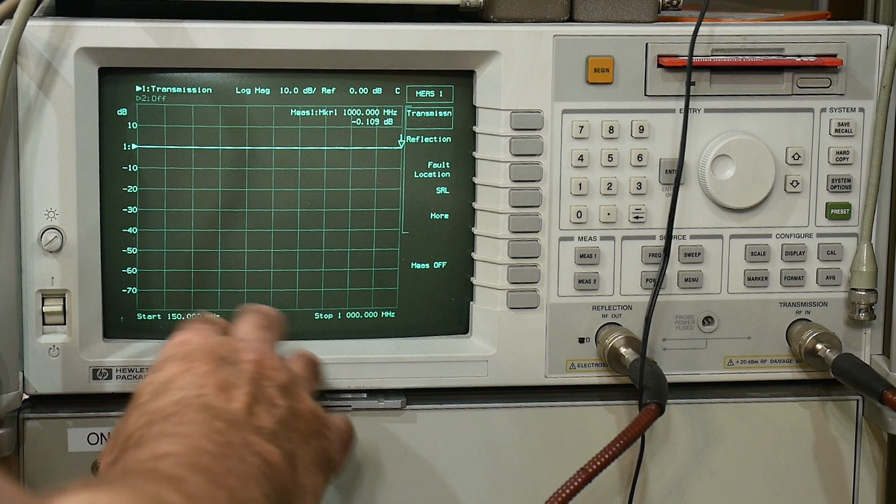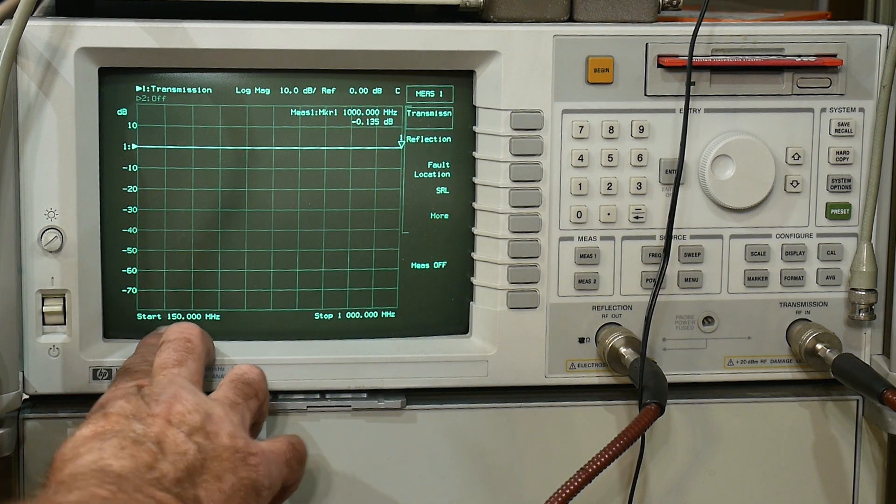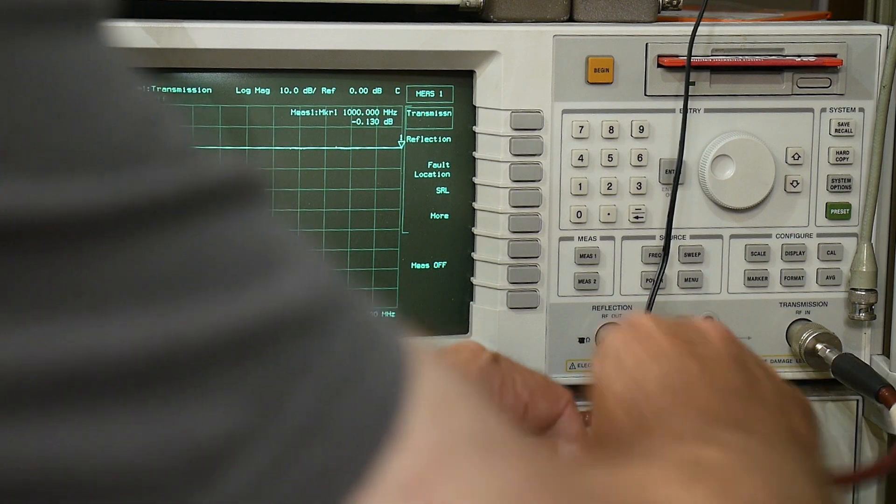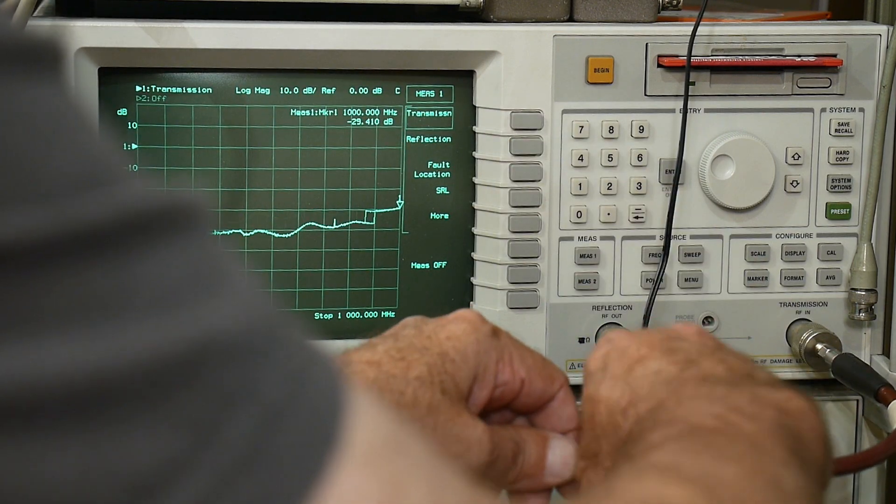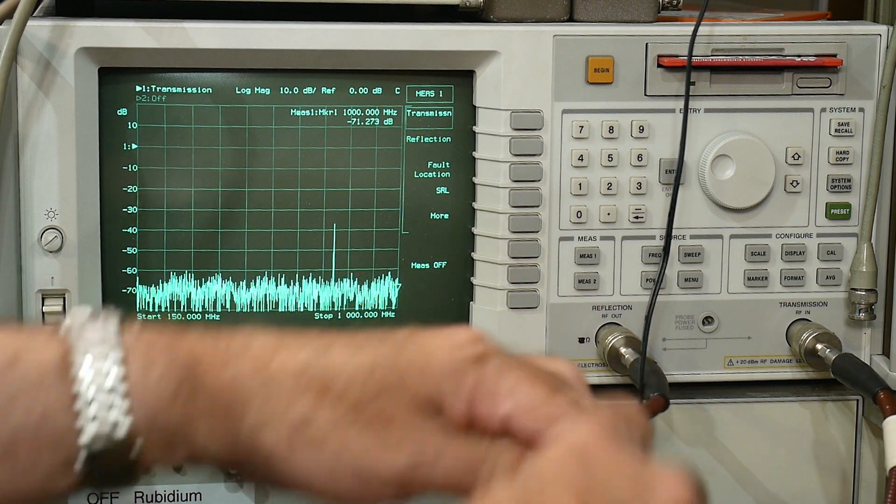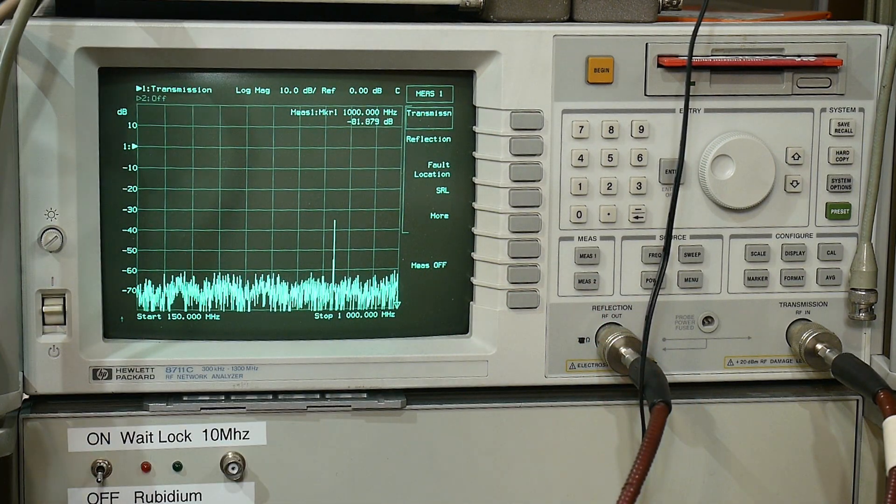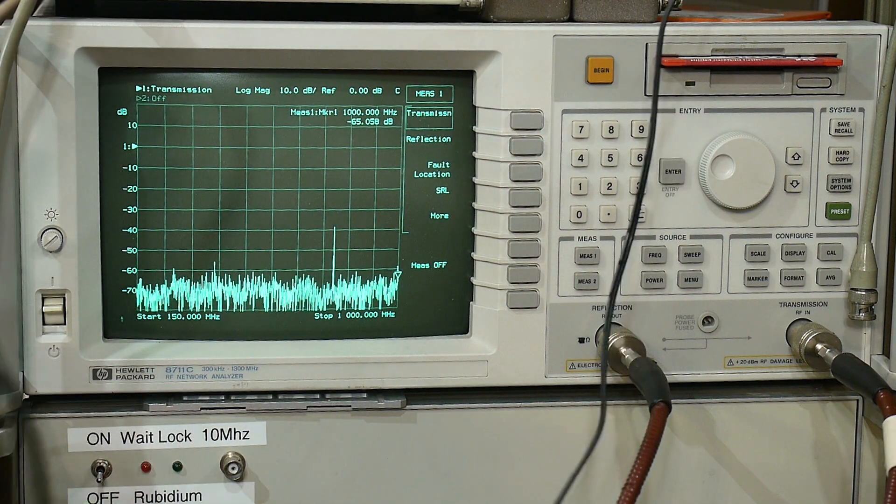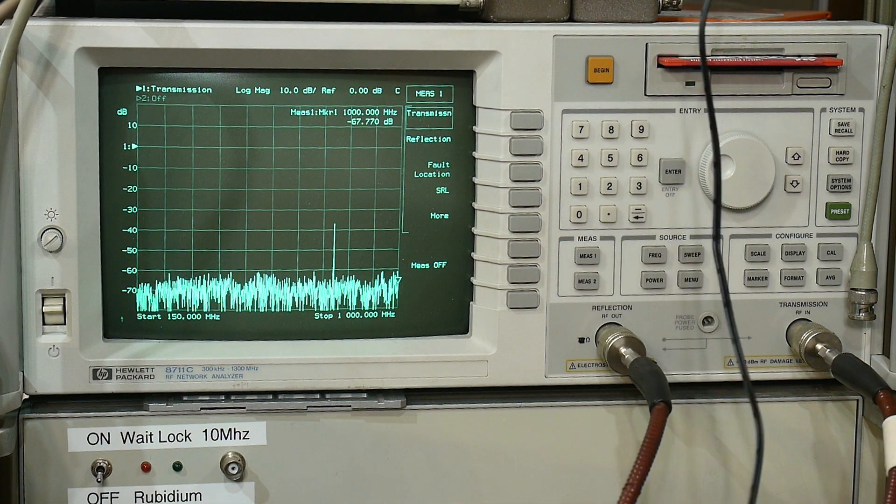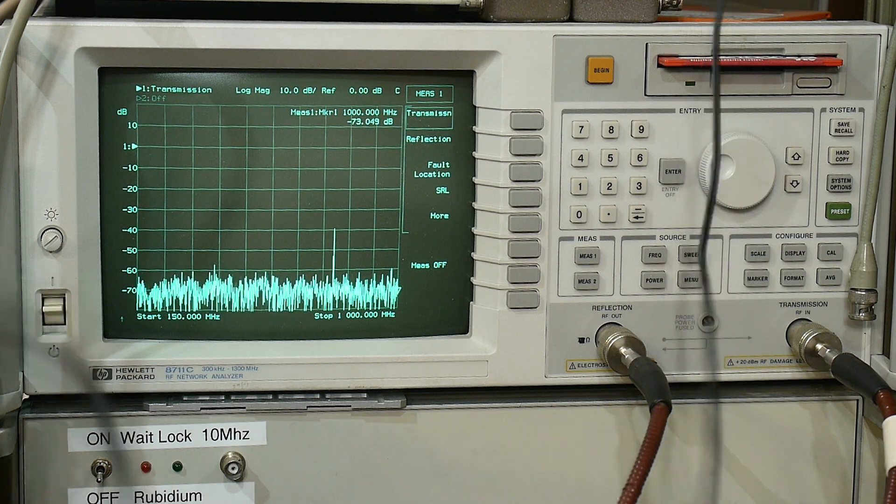Alright, we'll be doing a transmission measurement. I have it sweeping between 150 megahertz and 1 gigahertz. And so it has a nice flat line now. So we will disconnect the through. And we're going to connect a couple things in different ways now. This is the thing that's going to connect to the antenna. And this connects to the TV.